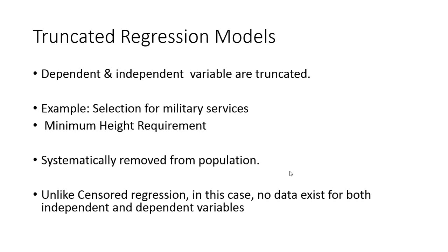Truncated regression models are a class of regression models where the dependent and independent variables are truncated. For example, if we want to model selection for military services, the military has a minimum height requirement. So a large population is rejected because of height, and systematically we remove a major portion of the population from the data.